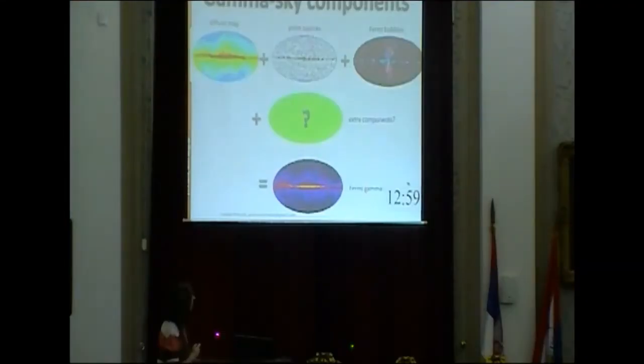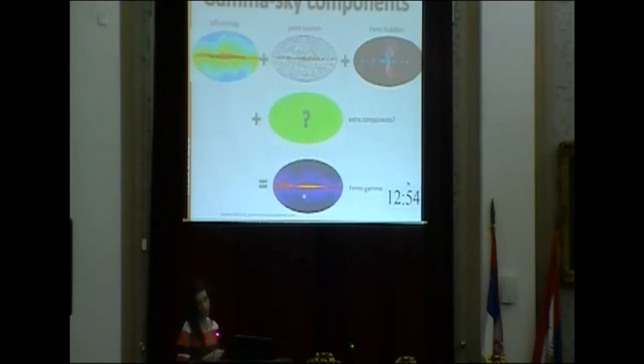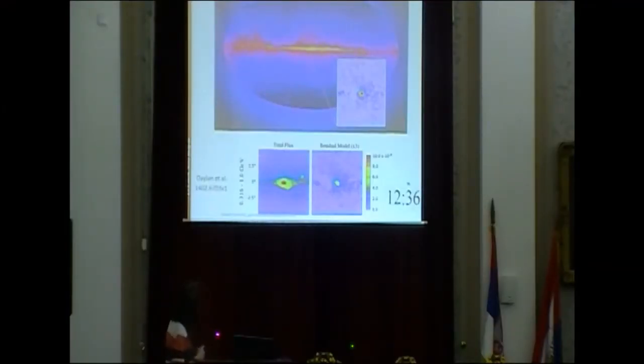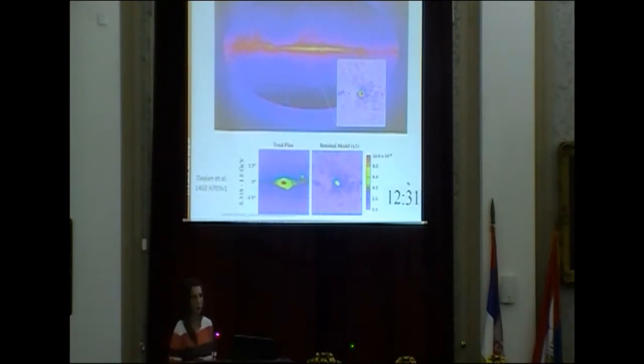As it turns out, when you model all of the maps you already know, you need an extra component — this forward map to get what Fermi sees. The extra component is an excess that comes from the galactic center, from the innermost part of our galaxy, a few degrees around the center of our galaxy, as you can see here. This has been taken from Dalen and his collaborators' paper, one of the first papers published on this topic.